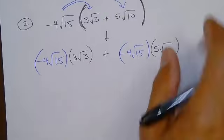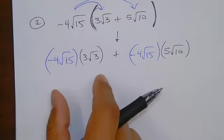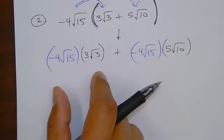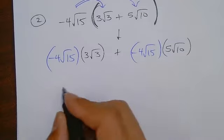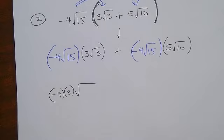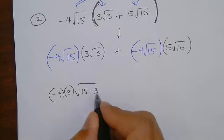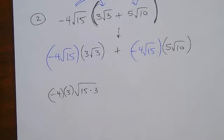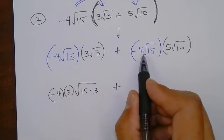It kind of just breaks out into two separate little individual problems. What's happening here? I'm going to have to do negative 4 times 3 on the outside, but don't multiply. Plus.